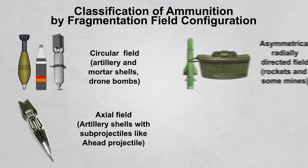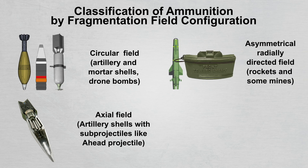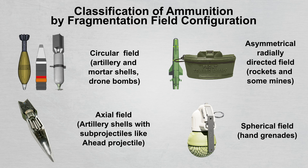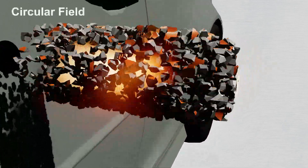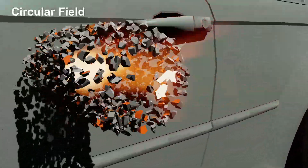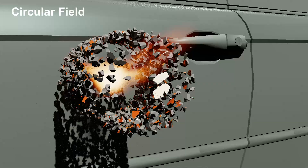Different ammunition has characteristic fragmentation field configurations that are optimal for performing specific tasks. According to configuration, circular, axial, asymmetrical, radial, and spherical fragmentation fields are distinguished. Damaging elements can be of natural or specified crushing, as well as elements in the form of ready-made striking elements.